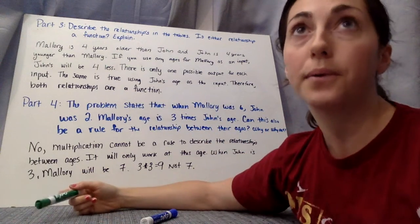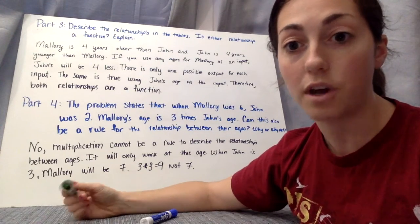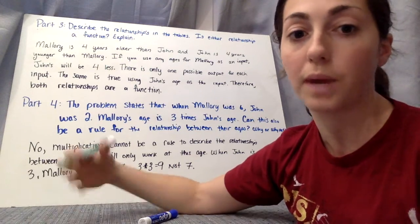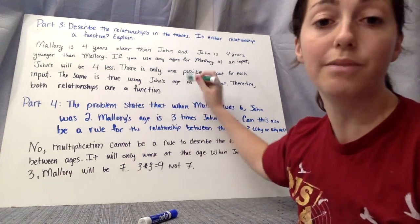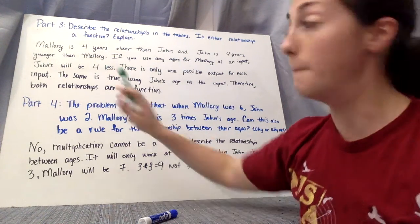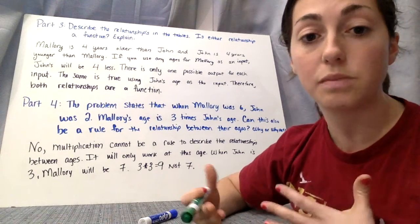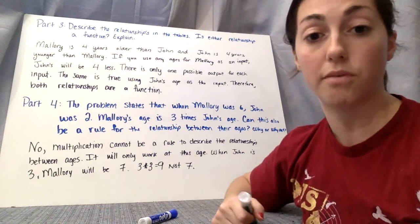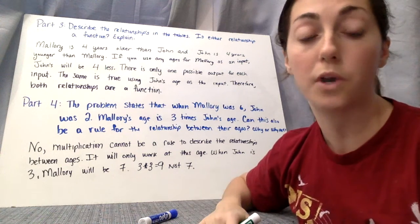It's not like when Mallory is 5, that John could be anything but 1. He's not going to be 7 when she's 5. Their age relationship is not going to change. And the same is true if we were looking at John's age as an input. Therefore, both relationships are a function. You're going to see a lot of cases where one way is a function and the other isn't. But in this case, both ways are a function. Okay, please get all that down. Pause the video, and then we'll talk about part 4 after.